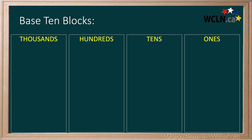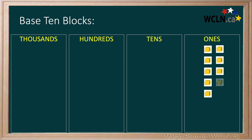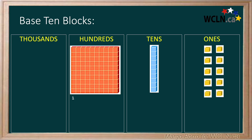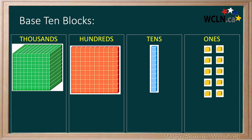You may recognize base 10 blocks from previous grades. Let's review them before building our number. 1s blocks are small. Each group of 10 can be snapped together to create a 10s block. A 100s block is made up of 10 rows of 10, or 100 1s blocks. A 1000s block is made up of 10 100s blocks put together, or 1,000 1s blocks.